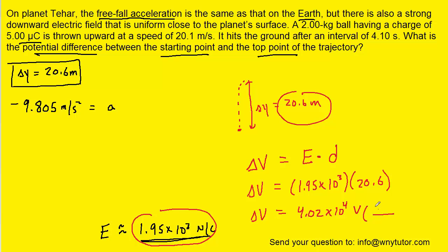If we wanted to convert that to kilovolts, we just remember that one kilovolt is 1,000 volts. And so when you perform that conversion, you would get approximately 40.2 kilovolts.